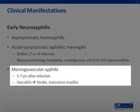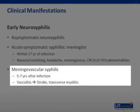Meningovascular syphilis occurs five to seven years after the initial infection. Patients typically present with focal neurologic signs related to a stroke or transverse myelitis. This results from a focal obliterative vasculitis of the small and medium-sized vessels and associated meningeal irritation, and can occur within the cerebral as well as intraspinal arteries. The spinal fluid shows the same typical abnormalities: an isolated elevation of protein, mild pleocytosis, and a reactive VDRL. Cerebral angiography shows diffuse narrowing of the intracerebral arteries and arterioles, while head imaging shows multiple areas of infarction.